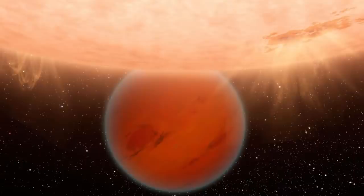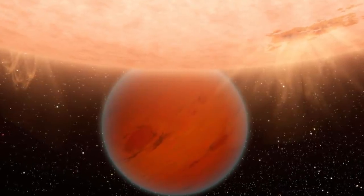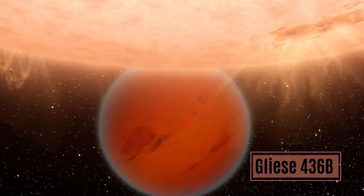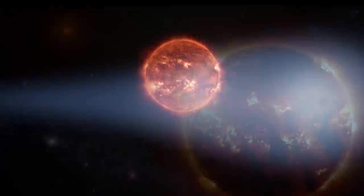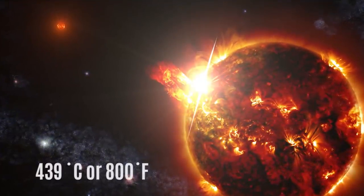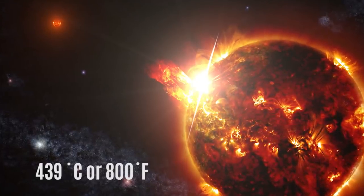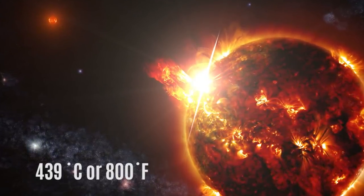At number 1 on our list of the most interesting things in outer space is the planet Gliese 436b, whose surface is made up of, believe it or not, burning ice. It orbits very close to a red dwarf star, so the temperature on its surface is 439 degrees Celsius, close to 800 degrees Fahrenheit.